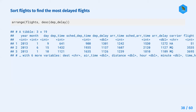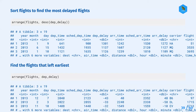For least delayed flights, you would just leave out the desc() function. Arrange returns the lowest values first by default - so you'd just remove the descending function from around that variable, since arrange by default sorts in ascending order.